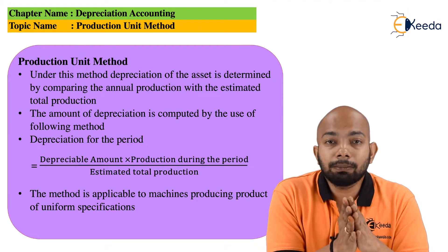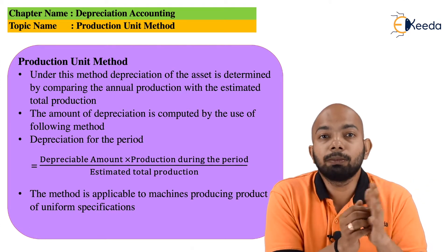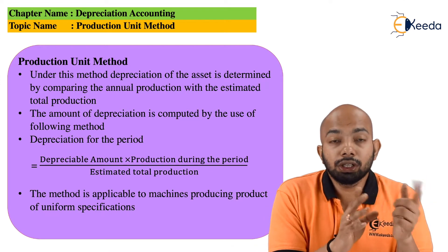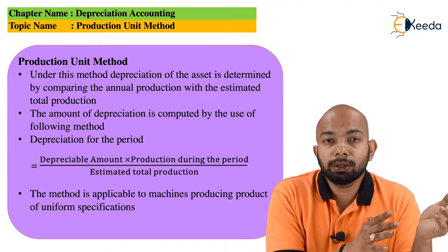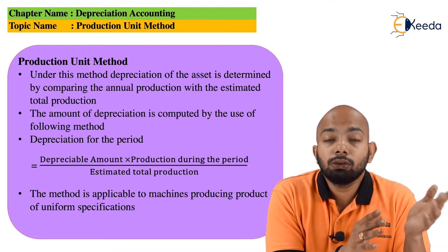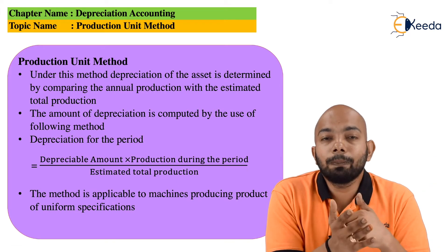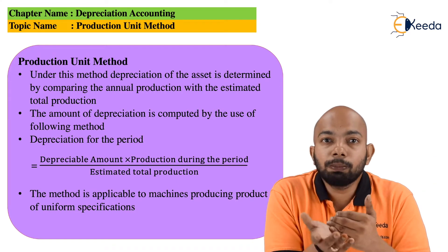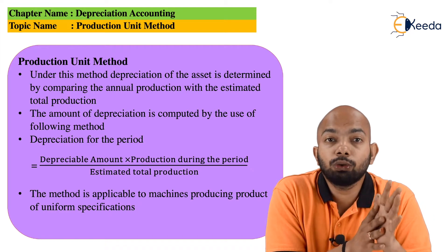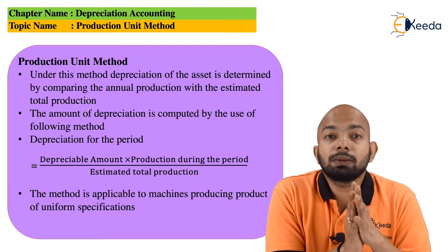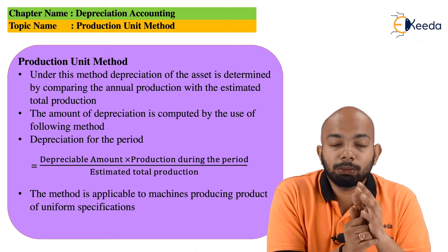Rest everything remains the same. This is the only difference between the Production Unit Method and the Machine Hour Method. Production units replace machine hours when compared to the Machine Hour Method, and machine hours are completely replaced by production units in the Production Unit Method. This is the key difference to understand when calculating depreciation using the Production Unit Method.